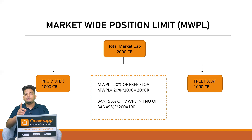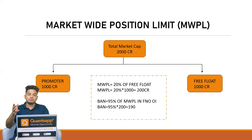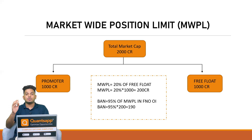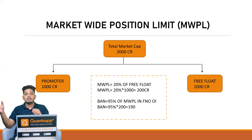A stock enters the F&O ban when open contracts cross 95% or above of the Market-Wide Position Limit. In this scenario, 95% of 200 crore — the MWPL — is 190 crore. So whenever the combined futures and options open contracts in a particular stock cross 95% of its MWPL, that stock enters the F&O ban.